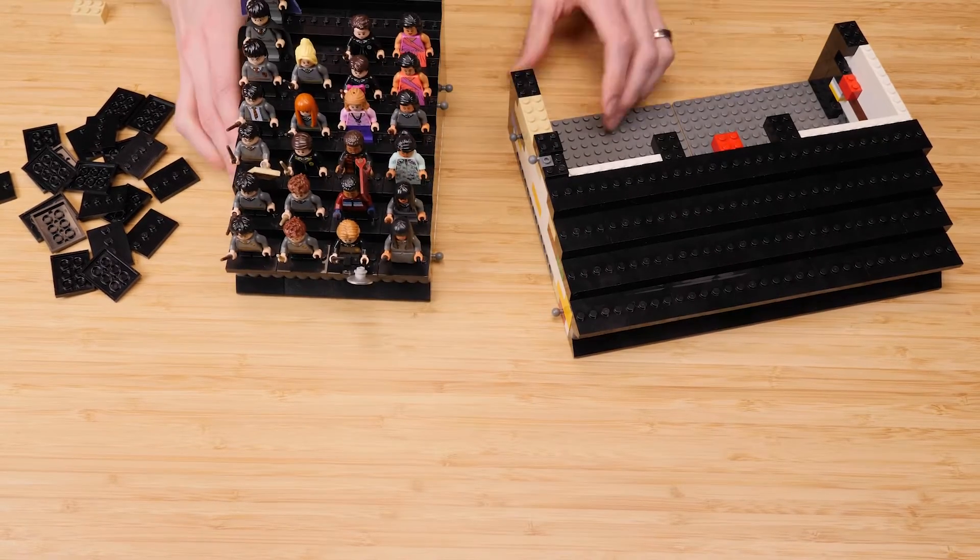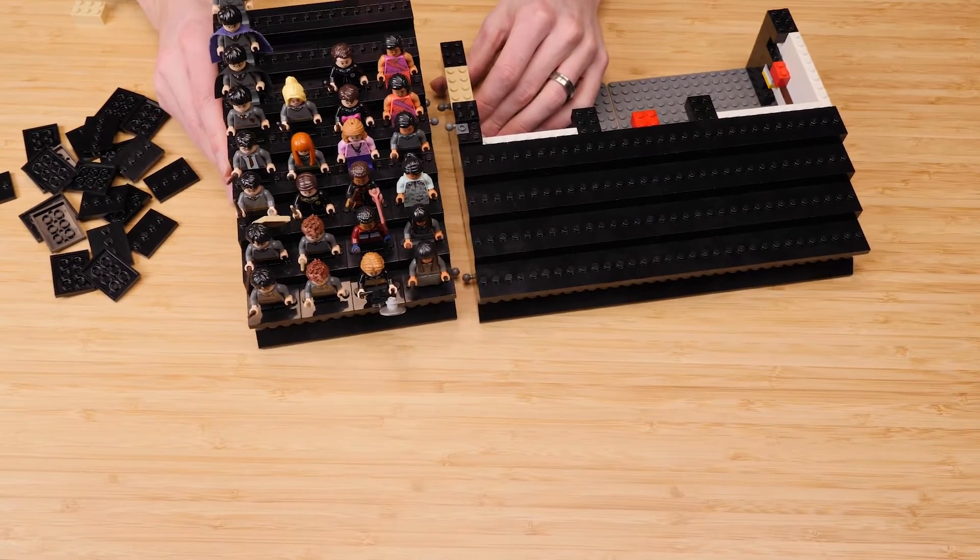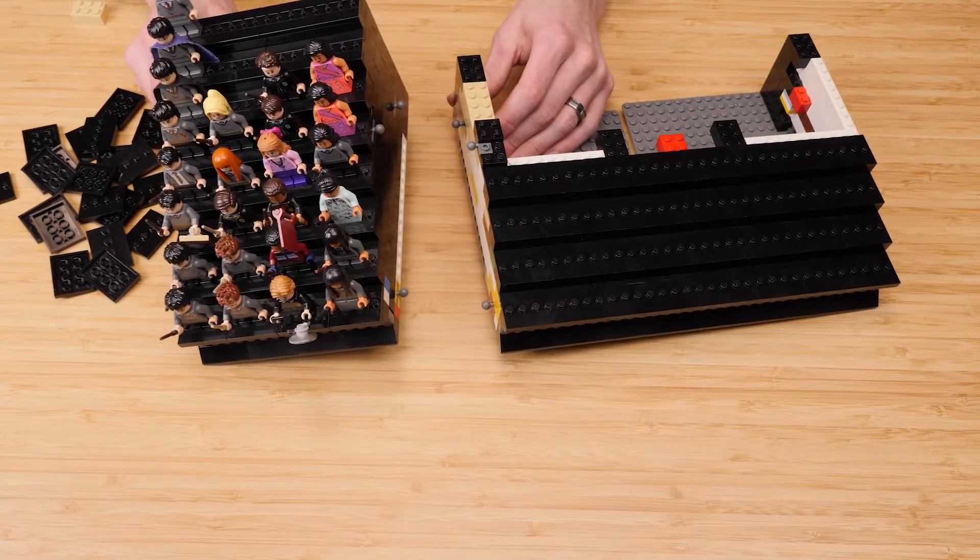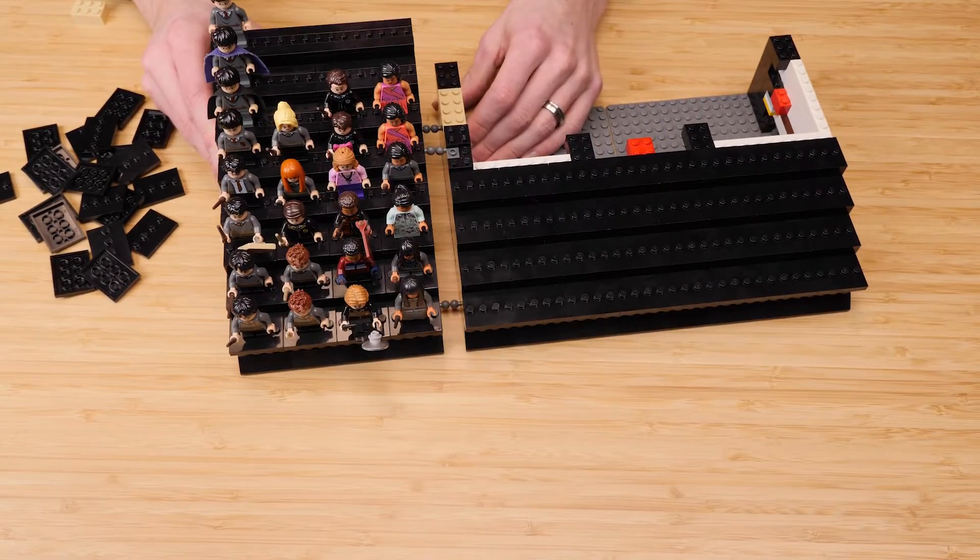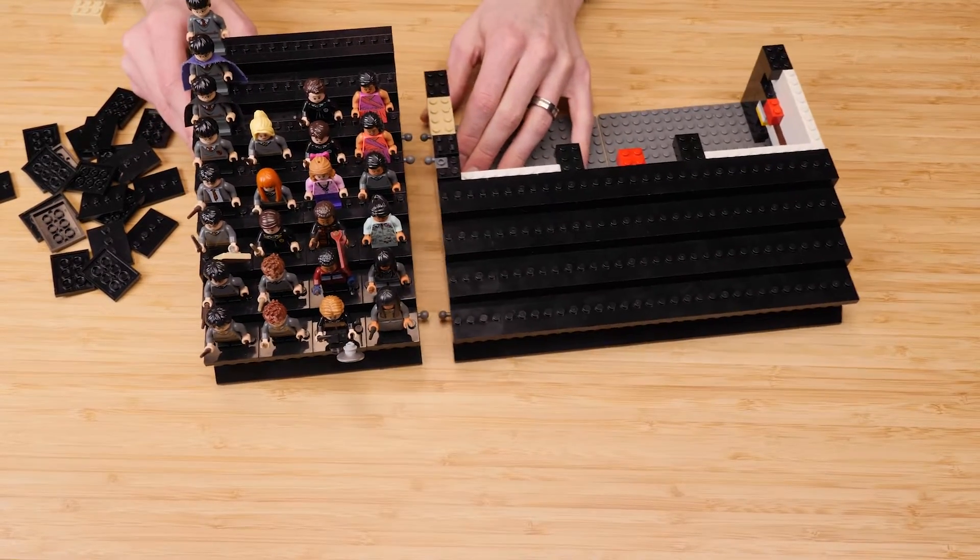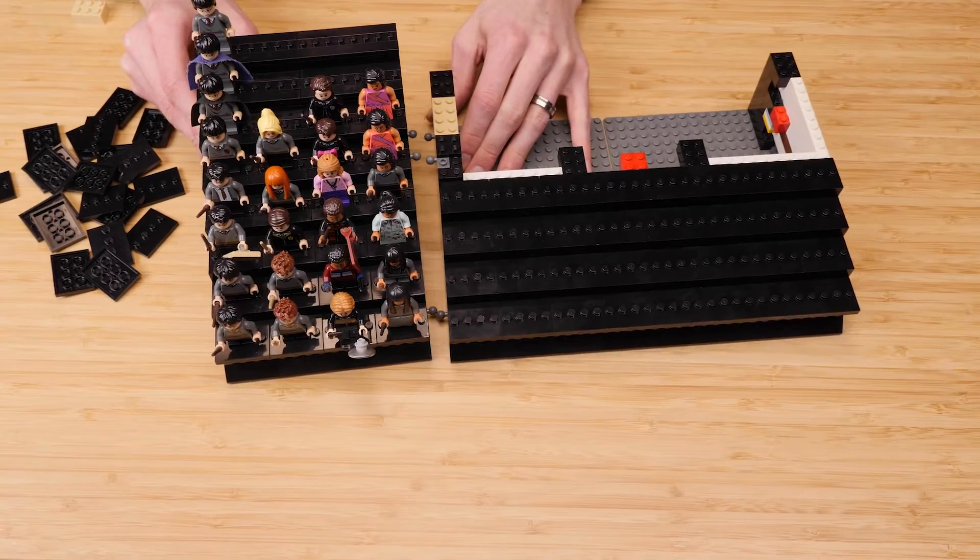A useful thing to do every once in a while is to make sure your stands actually work. As you can see here, they are lined up perfectly, except I put all the wrong things on the wrong side. When you are building these stands, always have your base model on hand if you're making another one so you can make sure you don't make ridiculous mistakes like this.